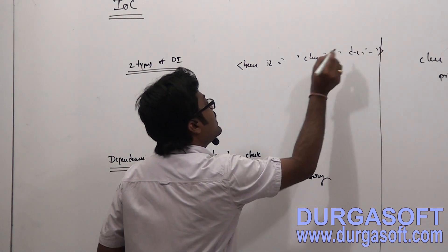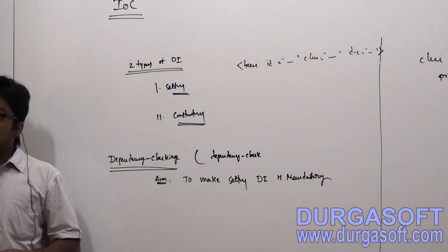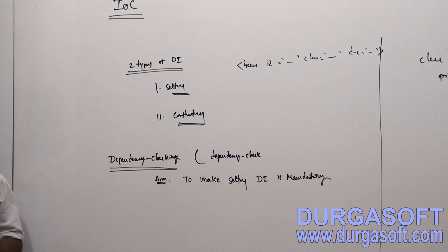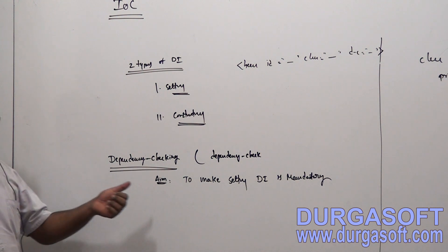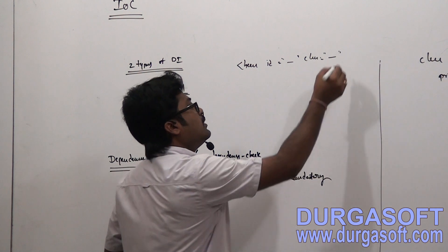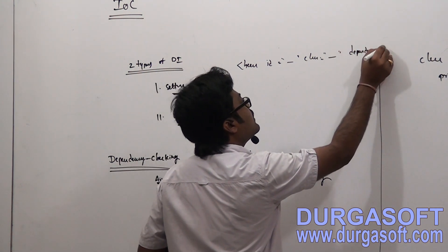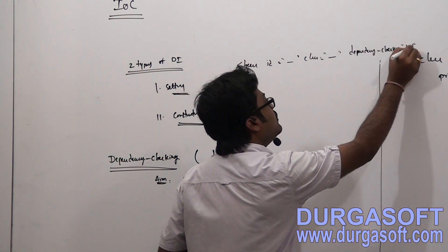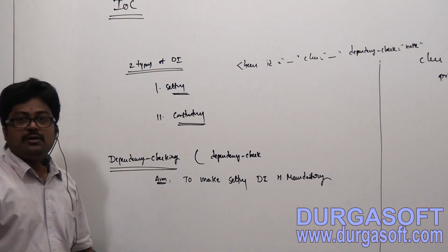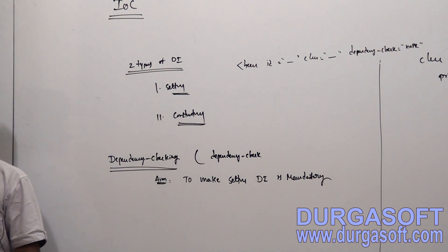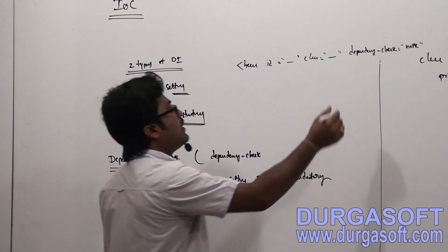If you apply the dependency-check attribute here, then for that bean, the IOC container will ask you to compulsorily pass parameters. In case of setter dependency injection, we do not have any limitations by default. The default value of dependency-check is none — it will not require any setter methods to be called. Without calling setter methods, you can still create a bean.